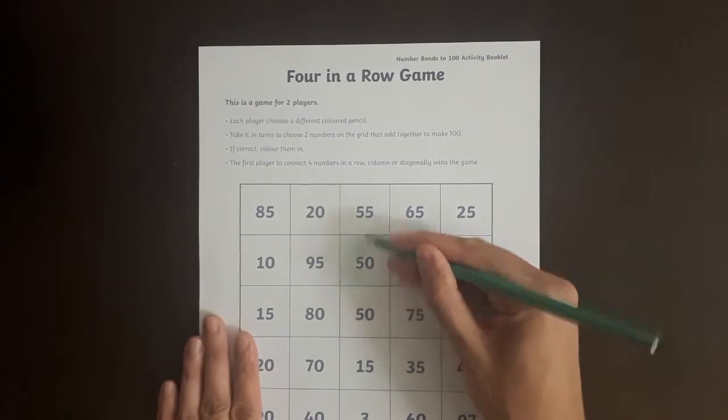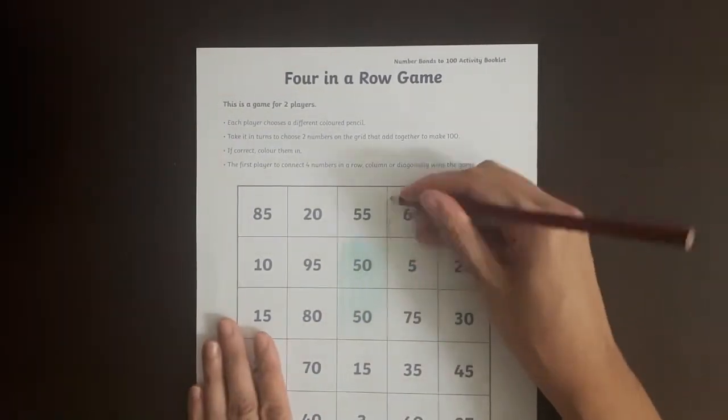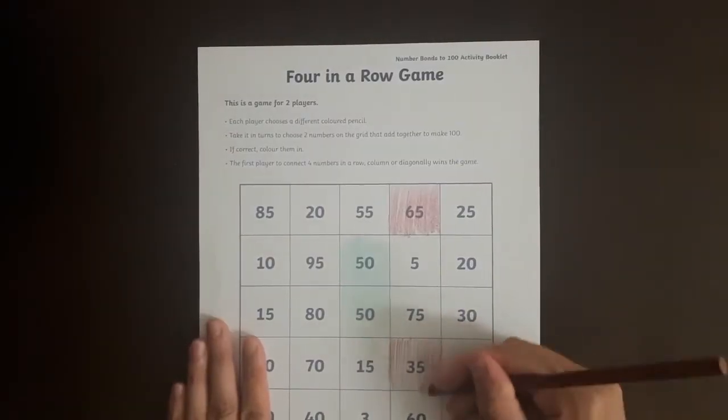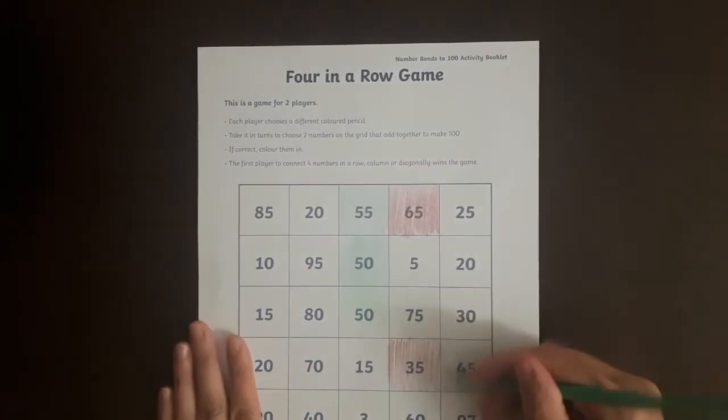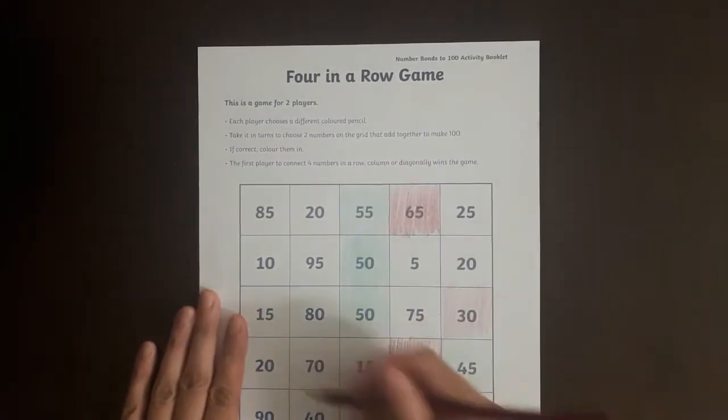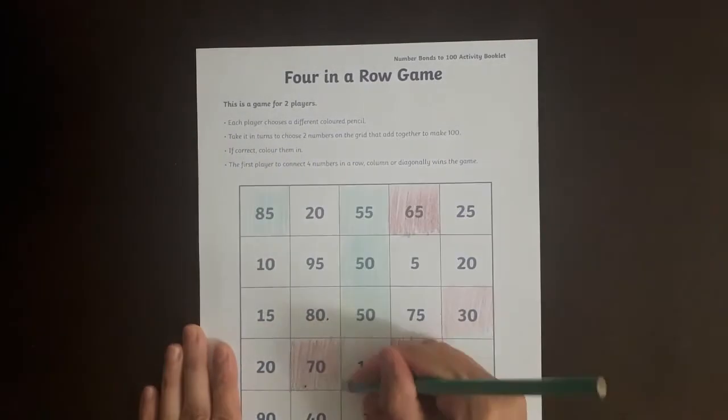Next is this game where learners each take a differently colored pencil, then take two numbers that can bond together to make 100. If they find a correct pair, they can color it in. The first person to get four squares in their color in a row wins.